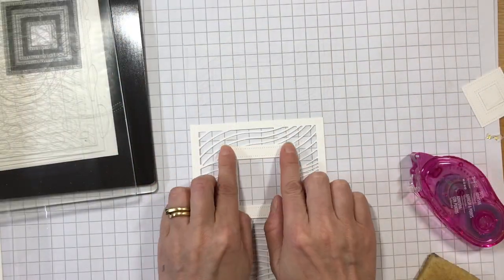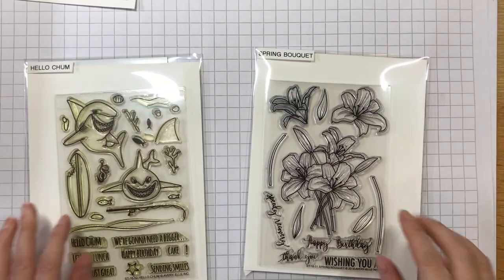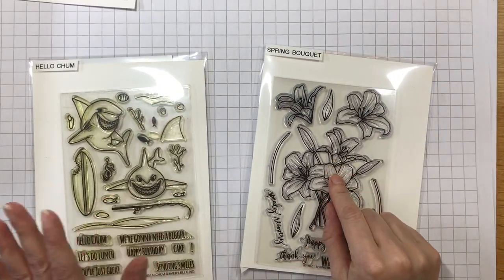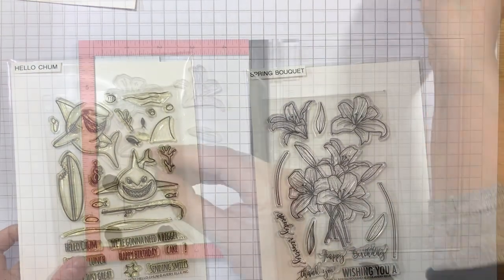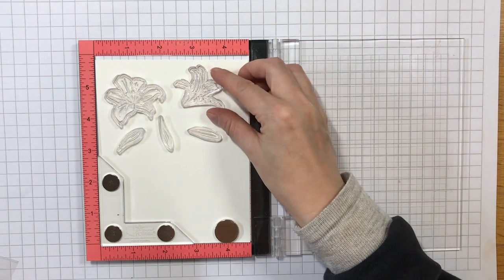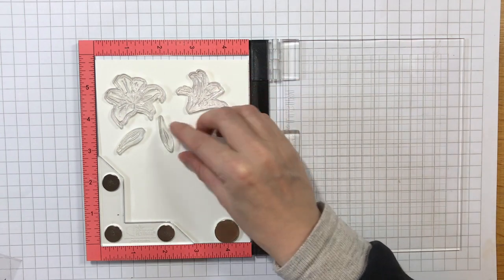I'm going to make two cards with the panels I've created: a masculine one using the Hello Chum set and a feminine one using more of the brand new products from the latest release, the Spring Bouquet stamp set and the gorgeous new liquid watercolors.